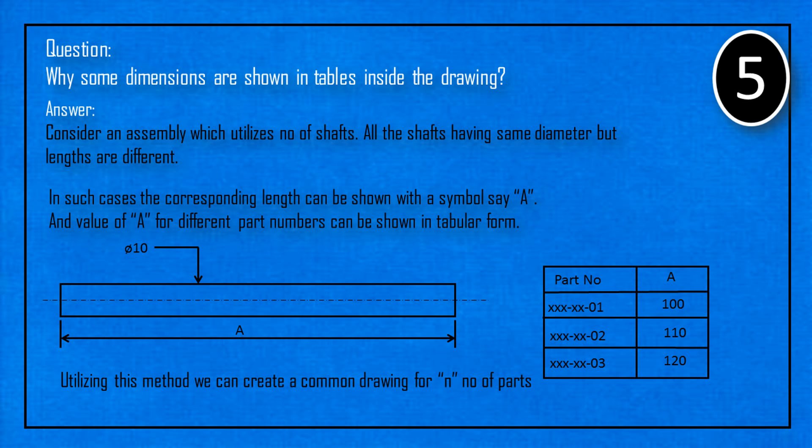In such cases, the corresponding length can be shown with a symbol say A. And the value of A for different part numbers can be shown in tabular form.